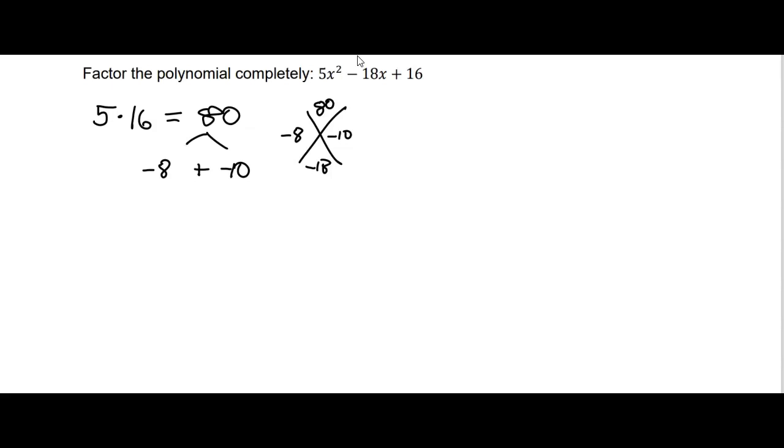you break the B term up into these, so we'd have 5x squared, minus 8x, and minus 10x. That's our minus 18x, plus 16.